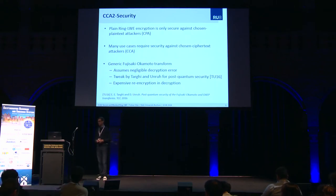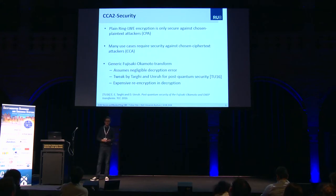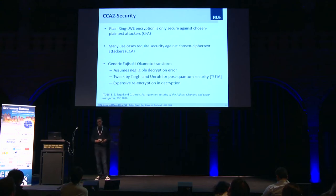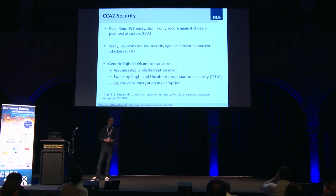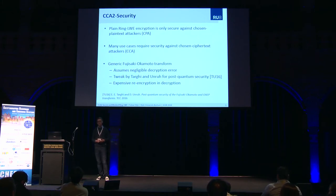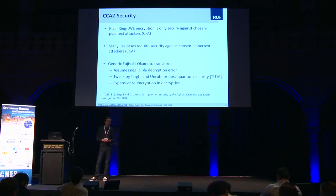For many use cases you want to have security against chosen ciphertext attackers. So the difference is that in a CCA setting, the attacker has access to a decryption oracle and can use such a decryption oracle to break the cryptosystem. If you want to convert a CPA secure scheme into a CCA secure scheme, you can apply the Fujisaki-Okamoto transform — a generic transform that can be applied to any scheme. It only assumes that the failure probability of the scheme is negligible, and for Ring LWE you can assure that by choosing the parameters appropriately.